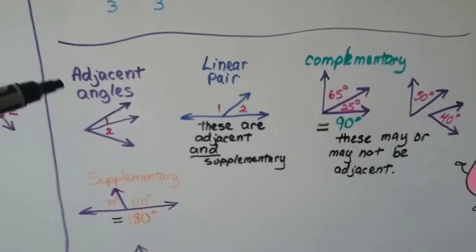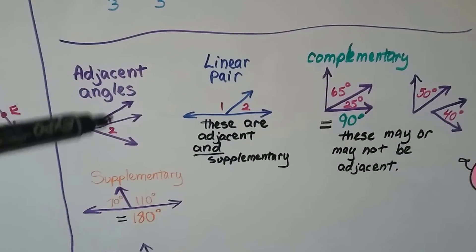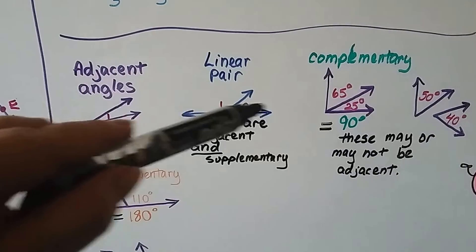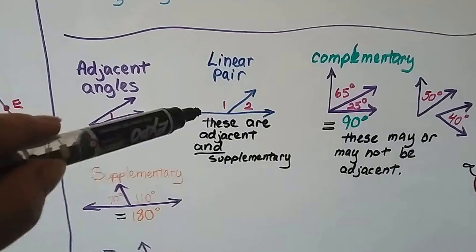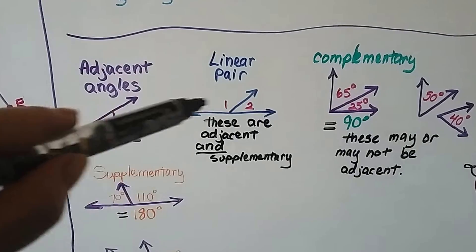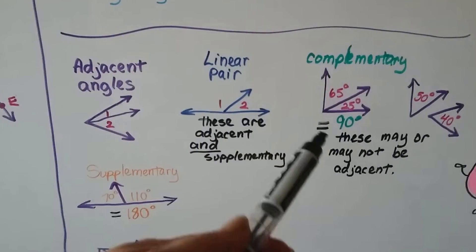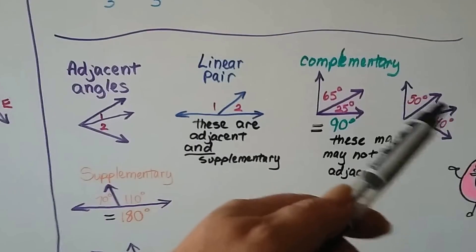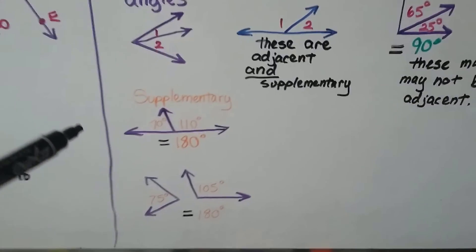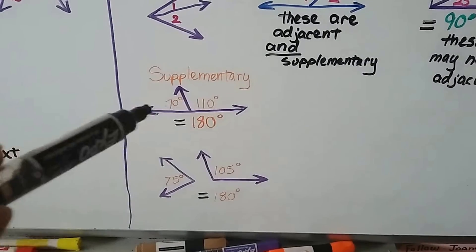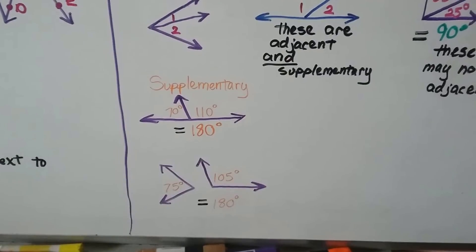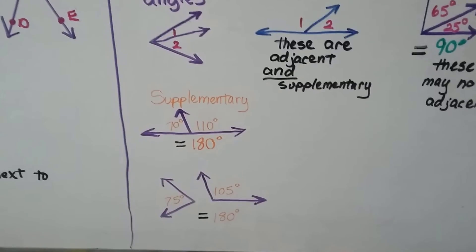To summarize: adjacent angles are next to each other with a common vertex. A linear pair is also adjacent and supplementary, totaling 180 degrees. Complementary angles can be apart or adjacent — they total 90 degrees. Supplementary angles can be a linear pair or apart, as long as they total 180 degrees.